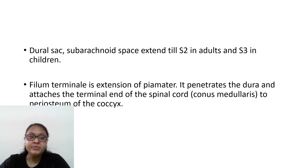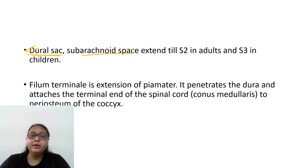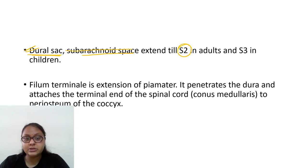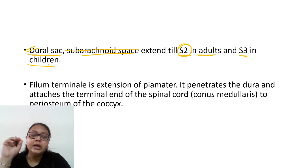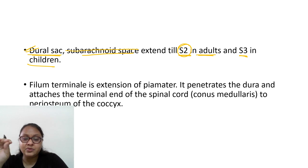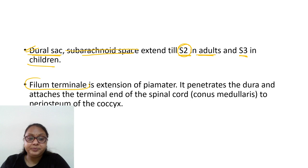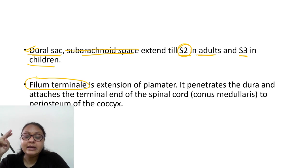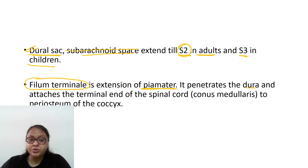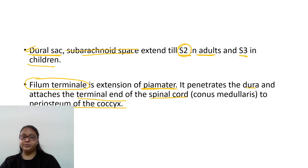The dural sac extends till S2 in adults and S3 in children. What is the filum terminale? It is an extension of the pia mater that penetrates the dura and attaches the terminal end of the spinal cord to the periosteum of the coccyx.